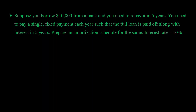In the last video we introduced the concept of loan amortization and created an amortization schedule for a case where we were paying the same amount of principal every year but the amount of interest was varying. Now we'll look at the same case but we'll only be making a single fixed payment every year. It's given that you borrowed ten thousand dollars from a bank and need to repay it in five years with a single fixed payment each year.